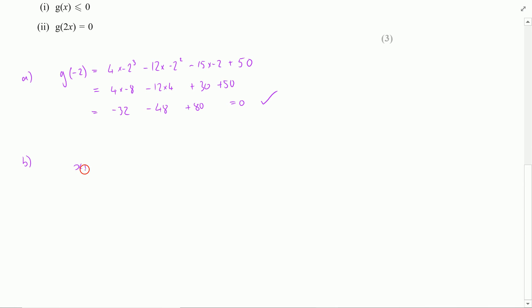So I'm going to set this out to say that I know that x plus 2 is a factor of 4x cubed minus 12x squared minus 15x plus 50. And then just to wander through the division.